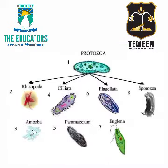Protozoa can locomote. For example, Amoeba can locomote through an organ called pseudopodia, Paramecium through cilia, and Euglena through a flagella.